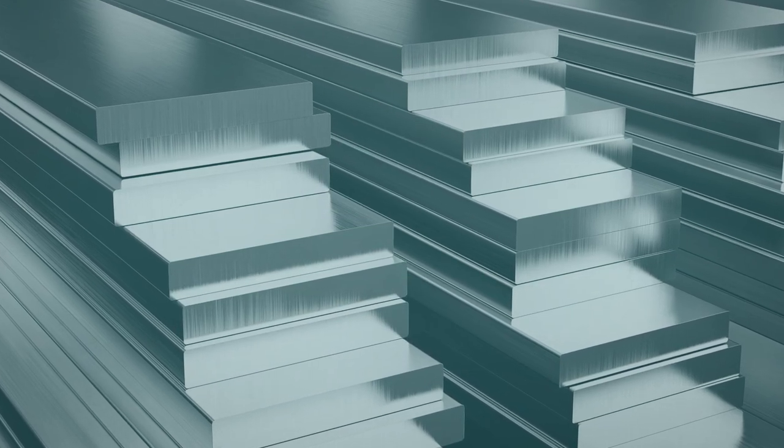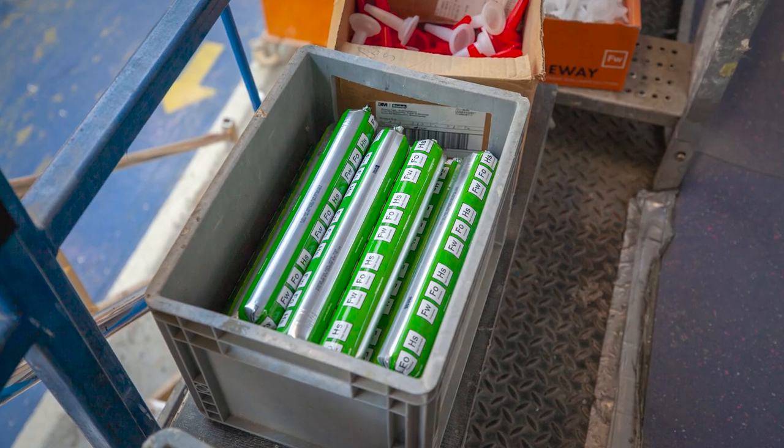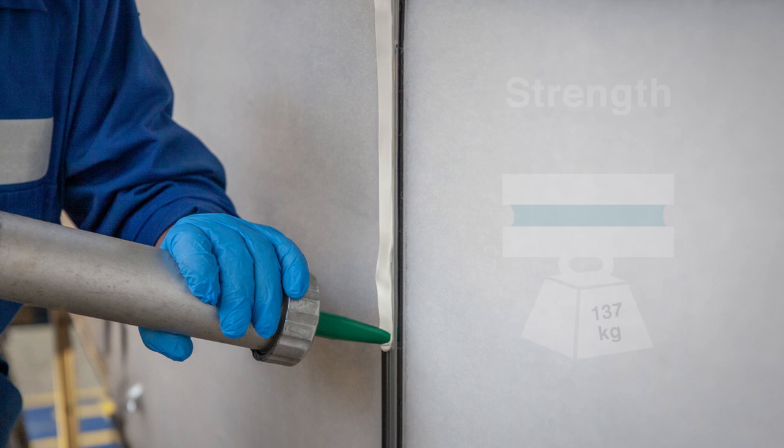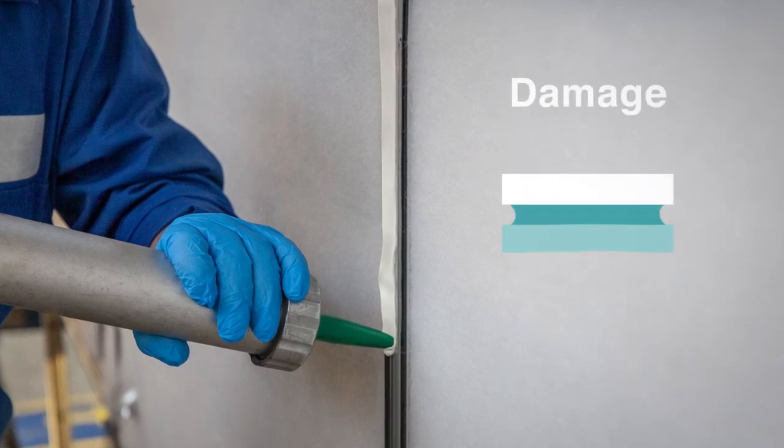Step 1: Choose the right adhesive. Ensure the adhesive choice meets the requirements of the bond, such as strength, flexibility, and damage to the aluminium.